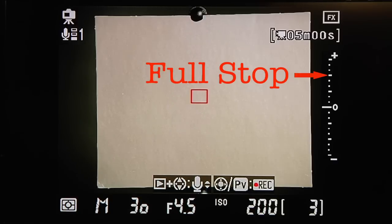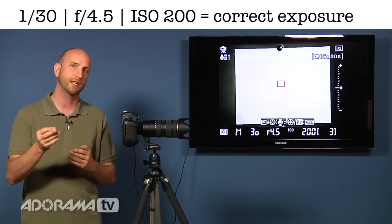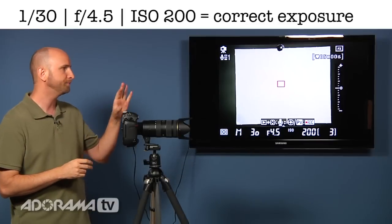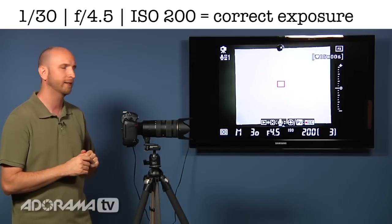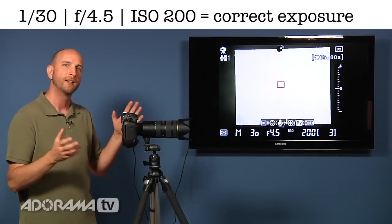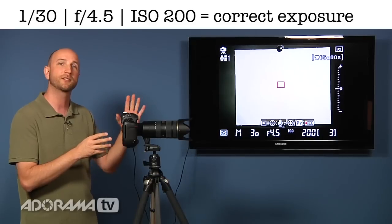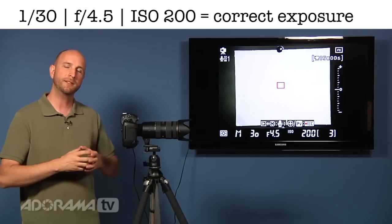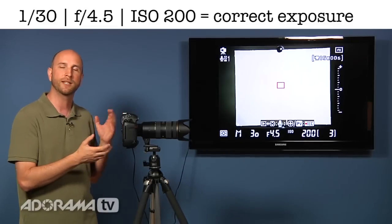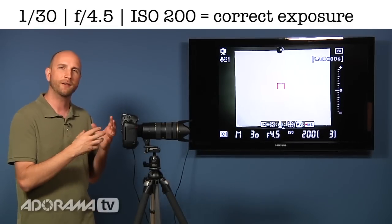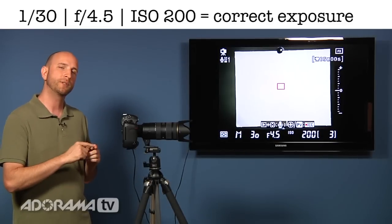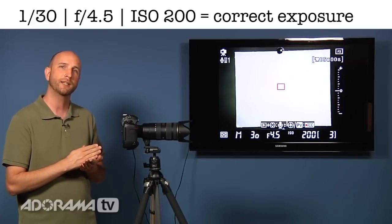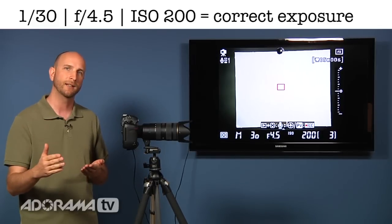And so, we can adjust everything either in full stops or third stops, which is really nice. You don't see anything else on that meter guide there, because I have this exposure set, so it's correct. Right now, we're shooting at a 30th of a second. Our aperture value is 4.5, and our ISO is 200. Now, let's say that I don't want to shoot at a 30th of a second, because that's too slow. I'll have some camera shake in the picture.